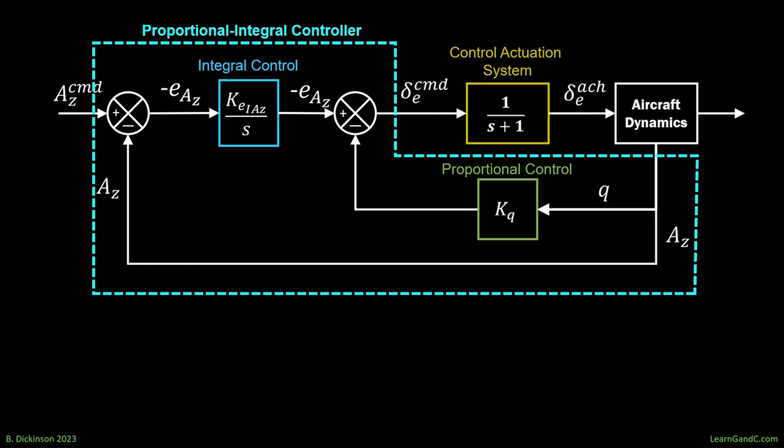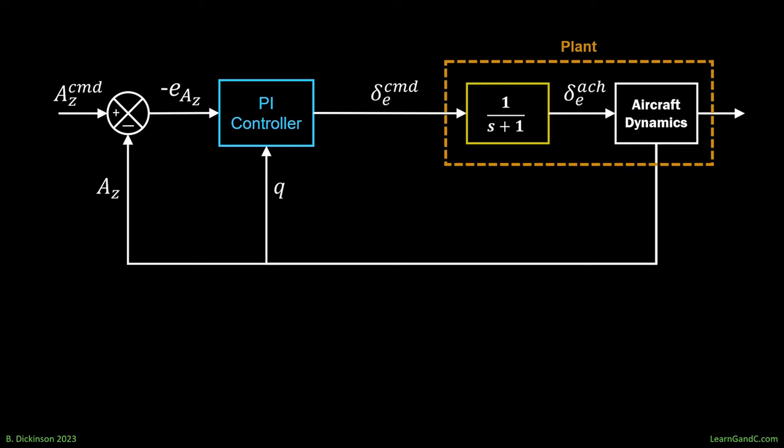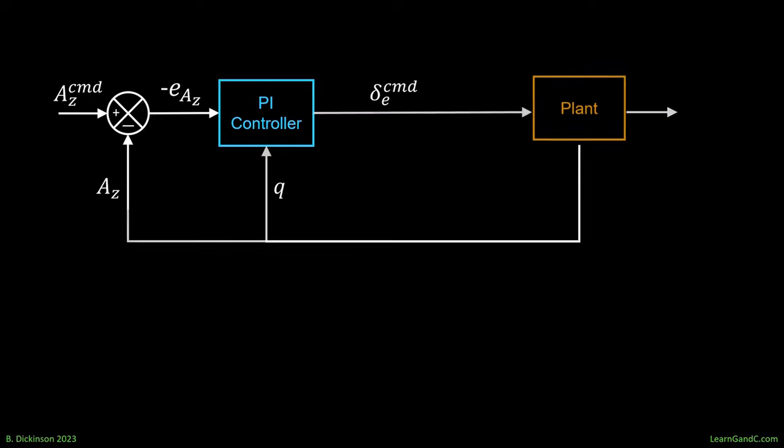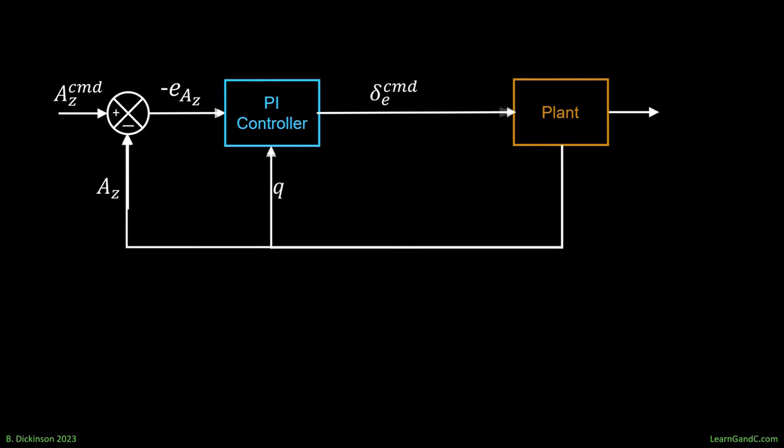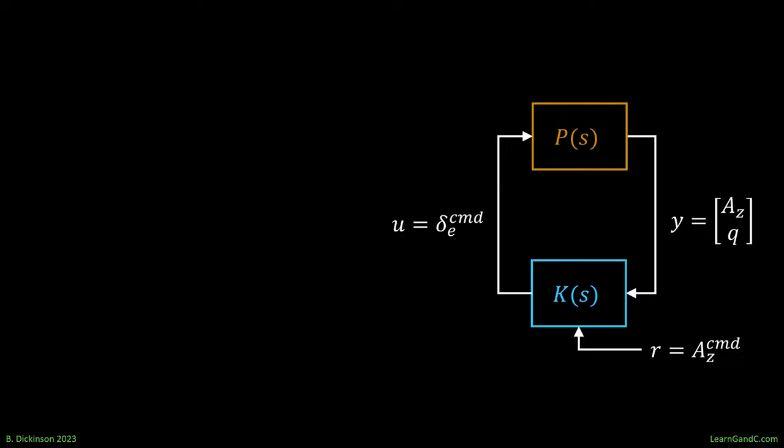This is the PI controller. This is the plant. It's the combination of the actuation system and the rigid body dynamics, in series. We can represent the controller as K of S. It has three inputs and one output. We represent the plant as P of S. It has one input and two outputs. Then, in its most abstract form, we have our feedback diagram.